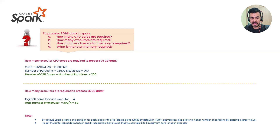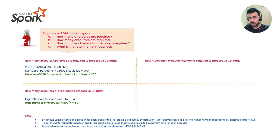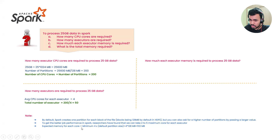You're able to answer the first two questions. Now let's move on to the third: how much executor memory is required to process 25GB? The expected memory for each core is a minimum of four times the default partition size. Default partition size is 128 MB, so 4 × 128 MB = 512 MB per core.